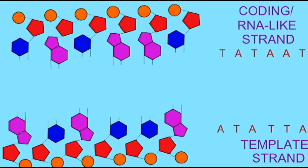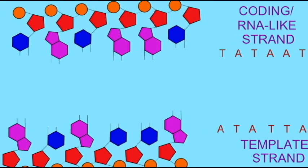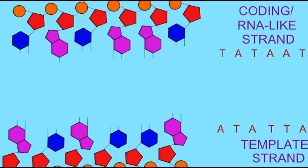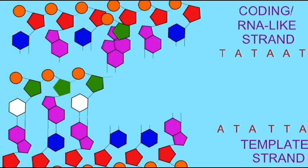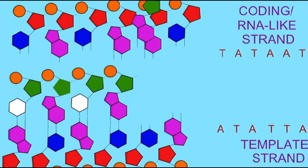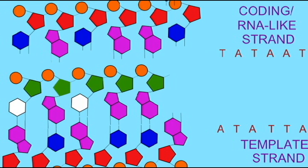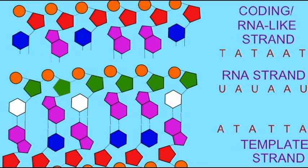The second strand is known as the coding or the RNA-like strand. The reason for this is the RNA sequence, which is complementary to the template strand, is very similar to the RNA-like strand sequence, which was complementary to the template strand.